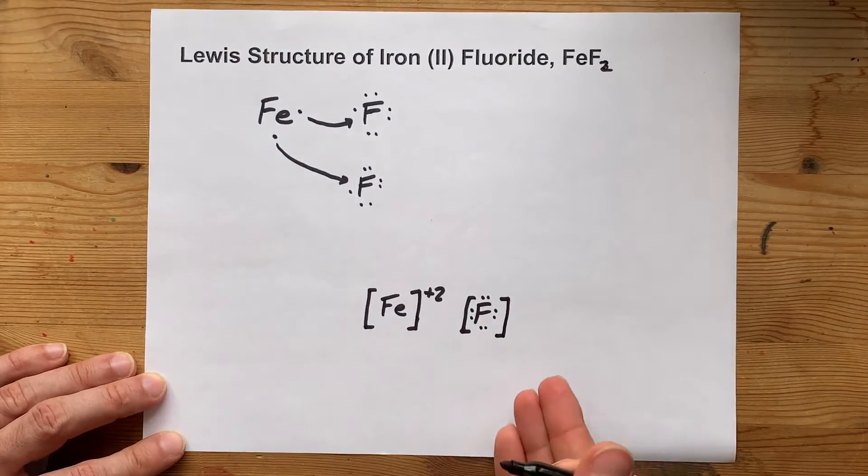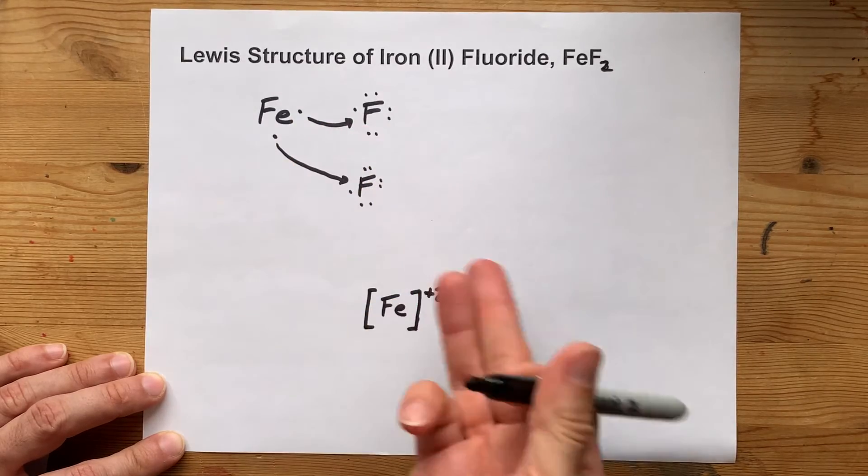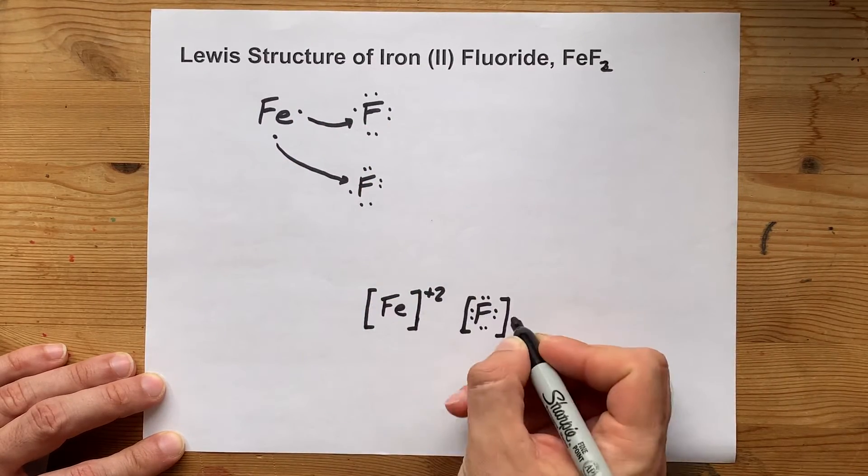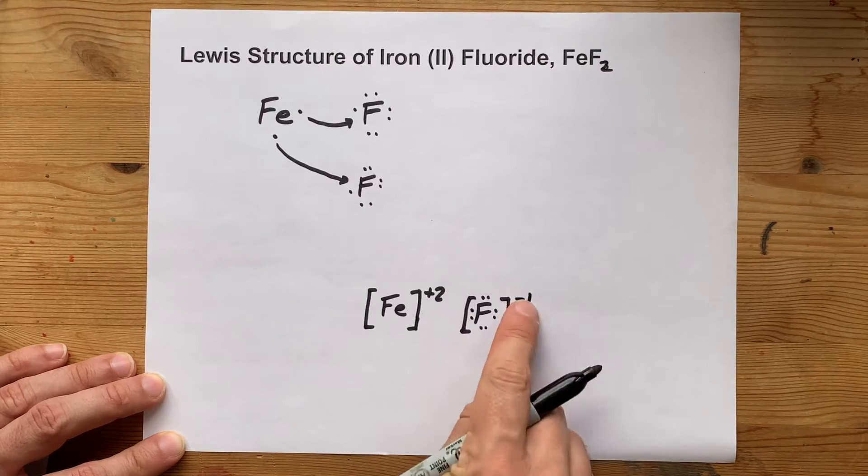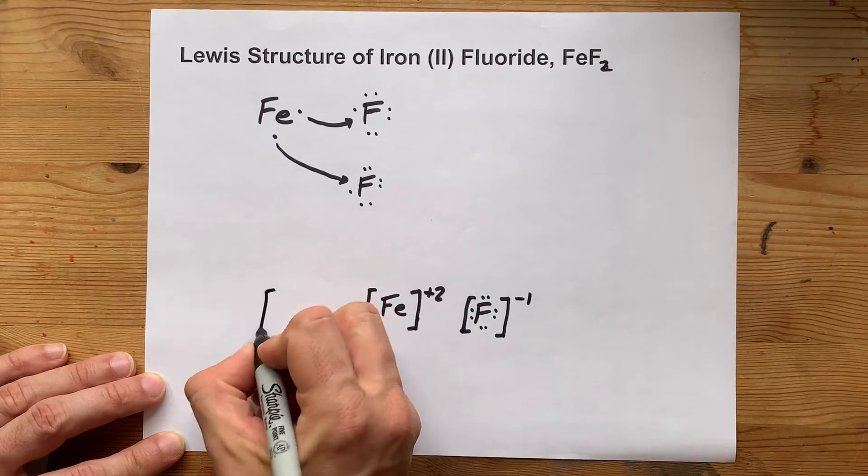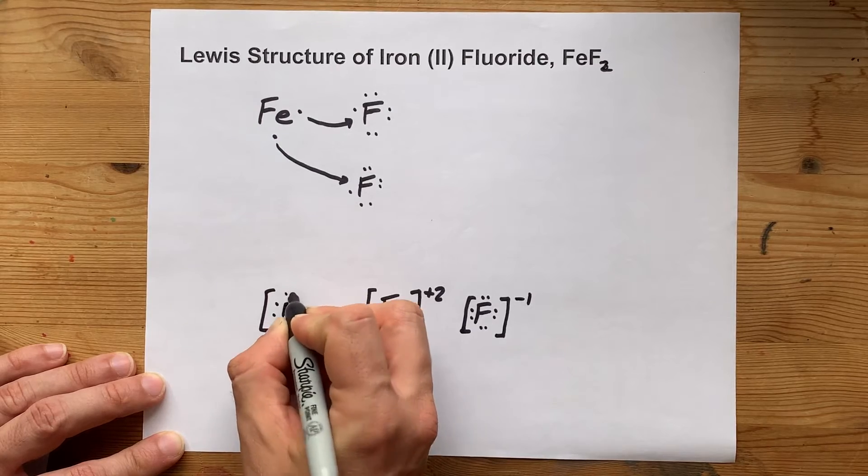Because we've completed the octet on each of them, and that's 1 more electron than it brought each, so I'm going to draw a minus 1 charge on them as well.